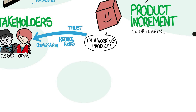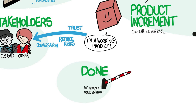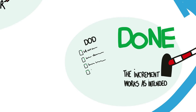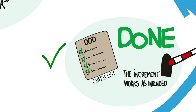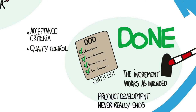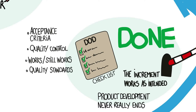This is possible because each product increment works — it is done. Done is a quality gate; nothing enters the product increment unless it is done. Every Scrum Team has a definition of done, and it is applied to every feature and every increment. The definition of done does not address whether the product is complete or finished — as long as a product is viable, its development usually never really ends. The definition of done is often a simple checklist that covers both acceptance criteria and quality control, ensuring that features from previous sprints still work and that the team maintains its quality standards.